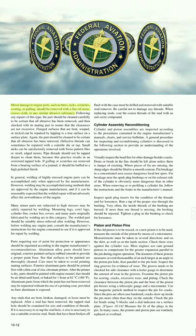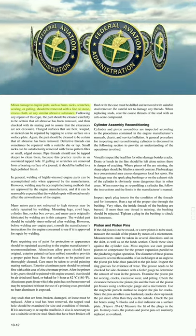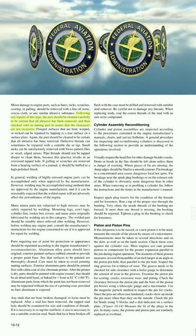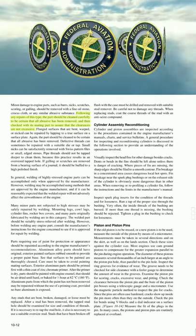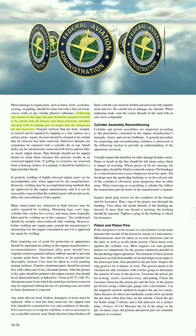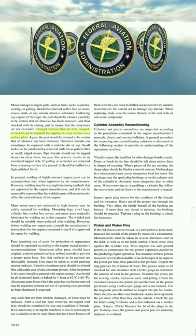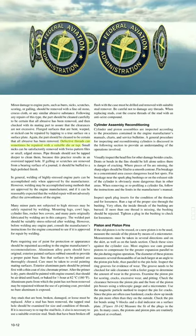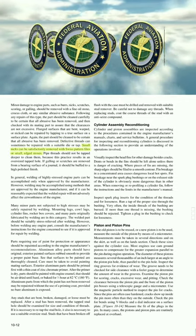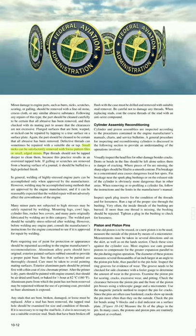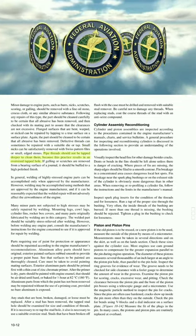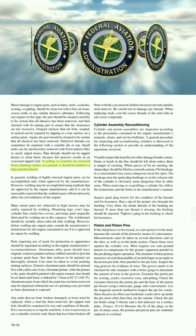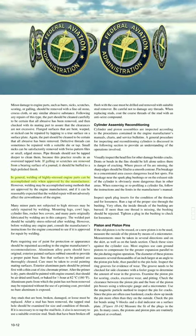Minor damage to engine parts such as burrs, nicks, scratches, scoring, or galling should be removed with a fine oilstone, crocus cloth, or any similar abrasive substance. Following any repairs of this type, the part should be cleaned carefully to be certain that all abrasive has been removed, and then checked with its mating part to assure that clearances are not excessive. Flanged surfaces that are bent, warped, or nicked can be repaired by lapping to a true surface on the surface plate. The part should again be cleaned to be certain that all abrasive has been removed. Defective threads can sometimes be repaired with a suitable die or tap. Small nicks can be satisfactorily removed with Swiss pattern files or small etched stones. Pipe threads should not be tapped deeper to clean them, because this results in an oversized tapped hole. If galling or scratches are removed from a bearing surface of a journal, it should be buffed to a high polished finish. In general, welding of highly stressed engine parts can be accomplished only when approved by the manufacturer.